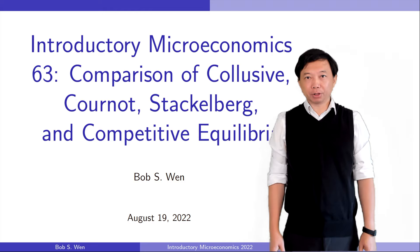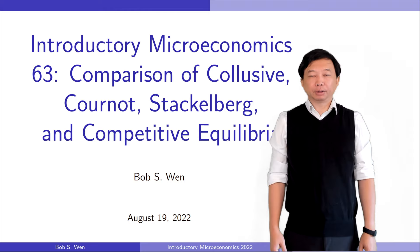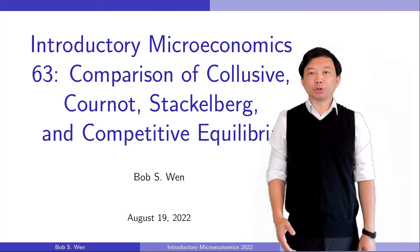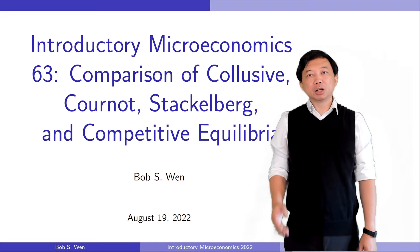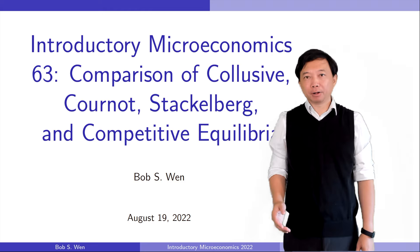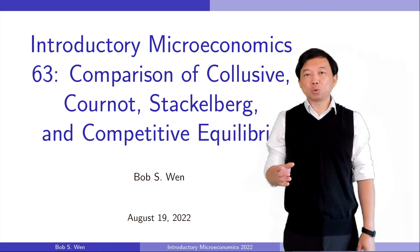The difference between them is the timing of their actions. The firms choose the quantities of their output simultaneously in the Cournot model, while the firms choose their quantities of output sequentially in the Stackelberg model. Today we will compare the collusive, Cournot, Stackelberg, and competitive equilibria. We will examine the equilibrium prices and quantities for the oligopoly firms from different models, graphically and mathematically.